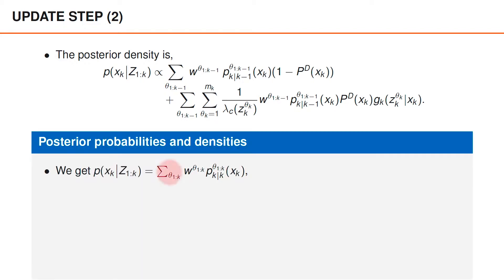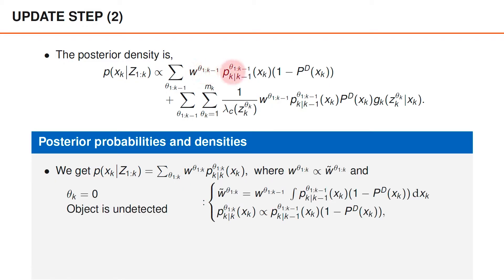We would now like to express the posterior as a sum over theta_{1:k} of weights times densities. Using tricks from earlier videos, we can express the weights and densities. The unnormalized weight of a single term is generally equal to the integral of the original function, whereas the density is proportional to the same function. For the hypothesis where theta_k equals zero and a specific sequence of associations up to time k-1, the unnormalized weight is proportional to the integral of the weight times the predicted density for the specific association sequence times 1-p_d, where the weight can be factored out from the integral.